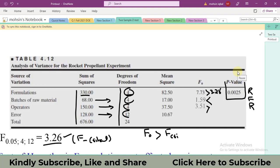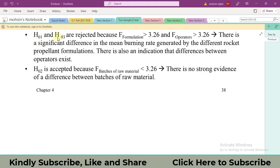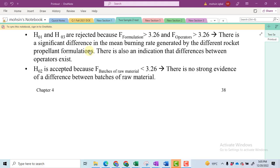Based upon this decision, now we'll see what are our conclusions upon the formulation. So this is the standard way of writing H1 and H3. The first and third hypothesis, null hypotheses are rejected. This naught represents null hypothesis. Because F naught of the formulation and F operators is greater than the critical value 3.26. There is a significant difference in the mean burning rate generated by different rocket propellant formulations.